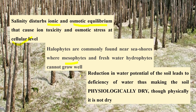Reduction in water potential of the soil leads to deficiency of water, thus making the soil physiologically dry but physically not dry. How can it be physically dry? There is plenty of water — the sea and the ocean are there. So it cannot be physically dry, but physiologically dry, because the fresh water needed by the plants for its daily activity and life sustenance is not there.